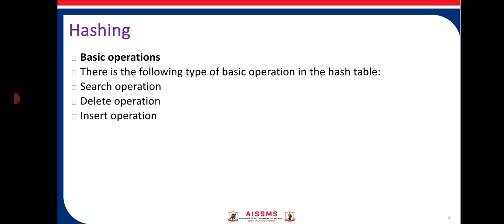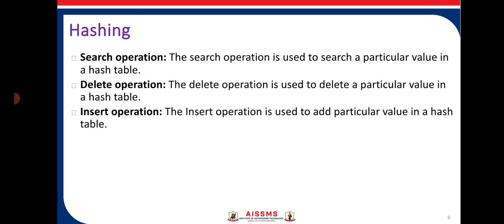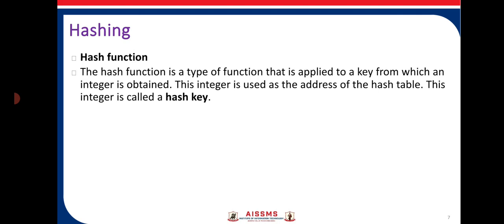On hashing, we perform three basic operations: search, delete, and insert. The search operation is used to search for a particular value in the hash table — to find out whether a particular record exists or not. The delete operation is used to delete a particular value from the hash table. The insert operation is used to add a value into the hash table.